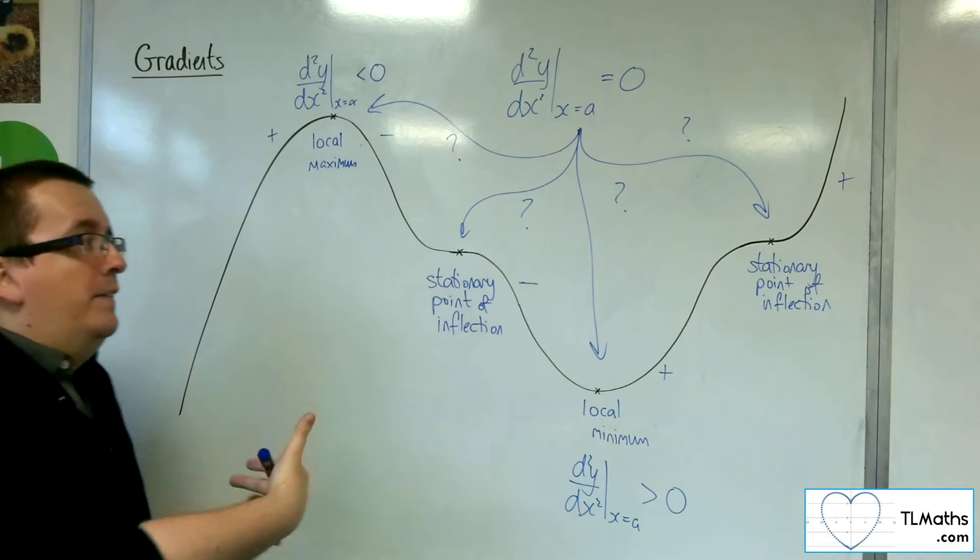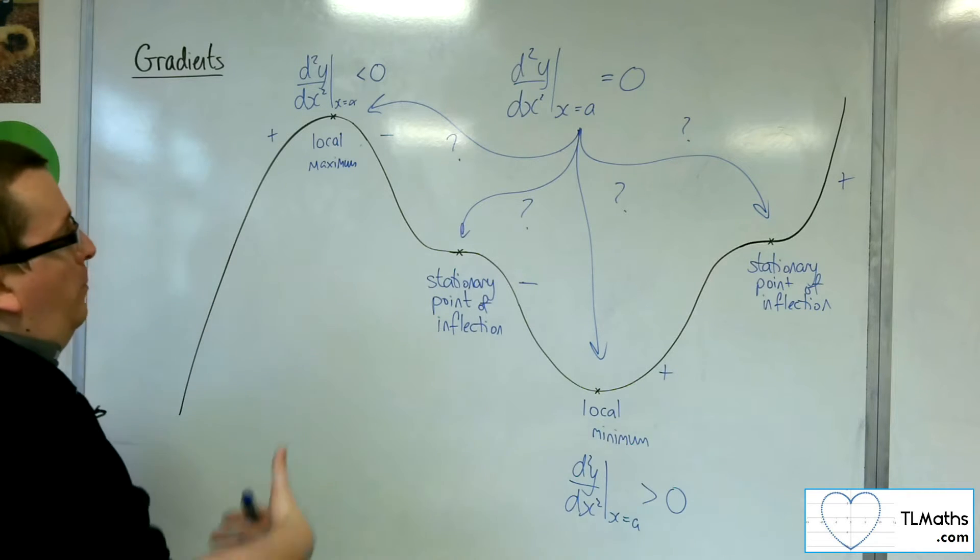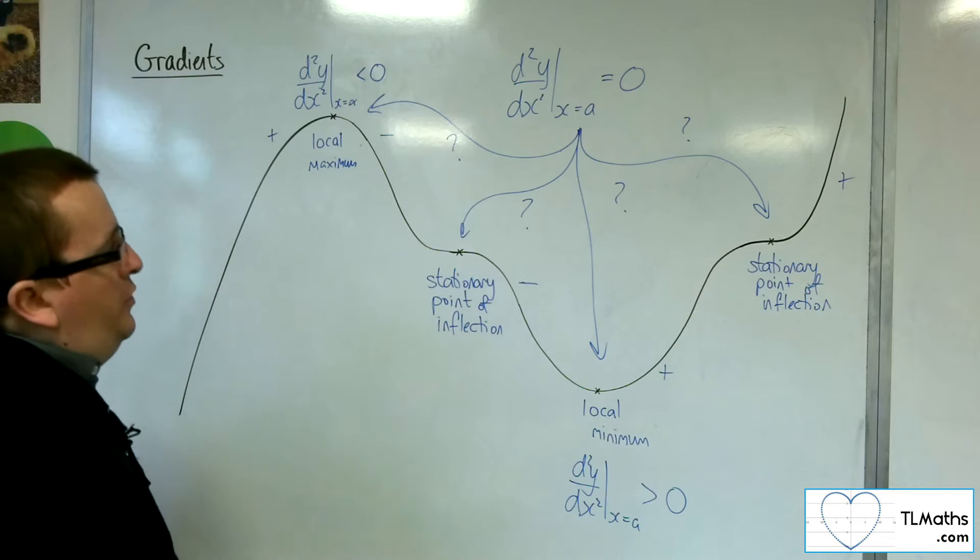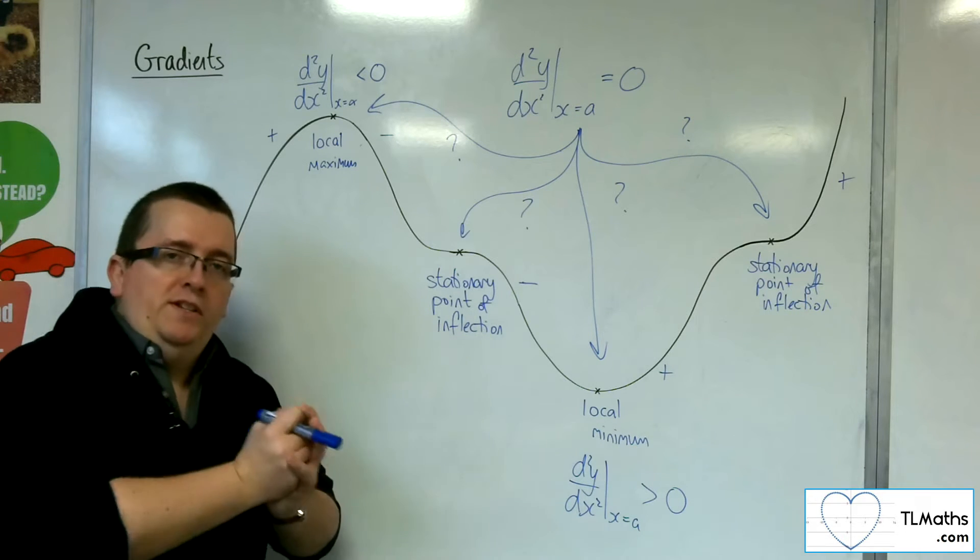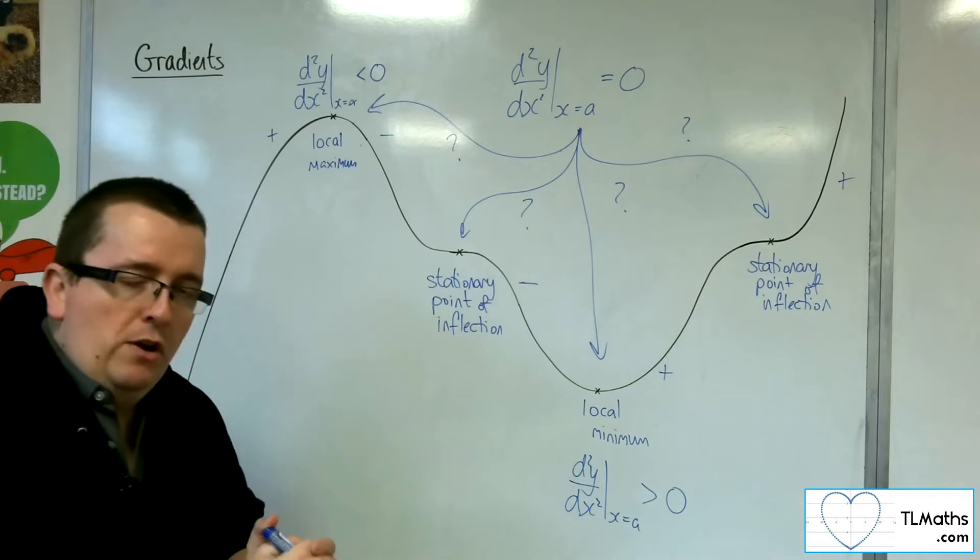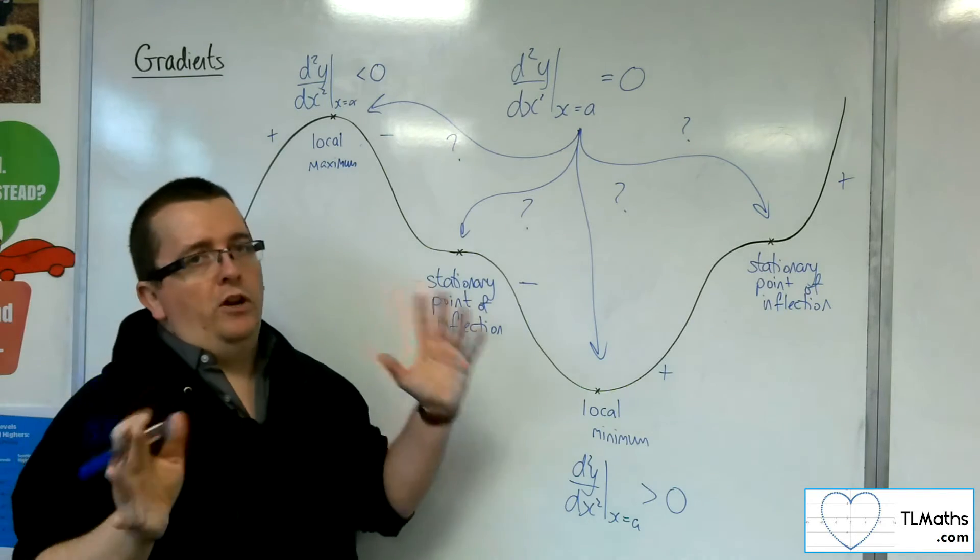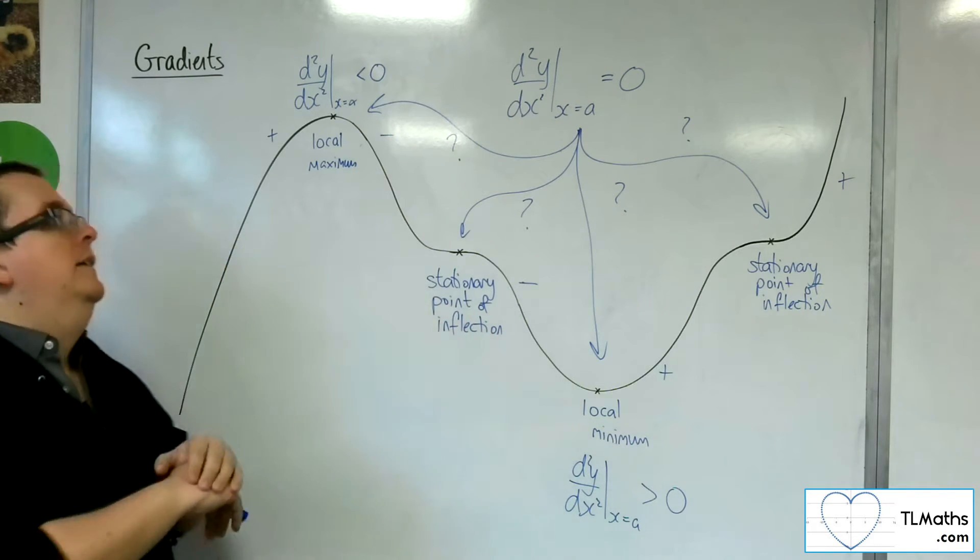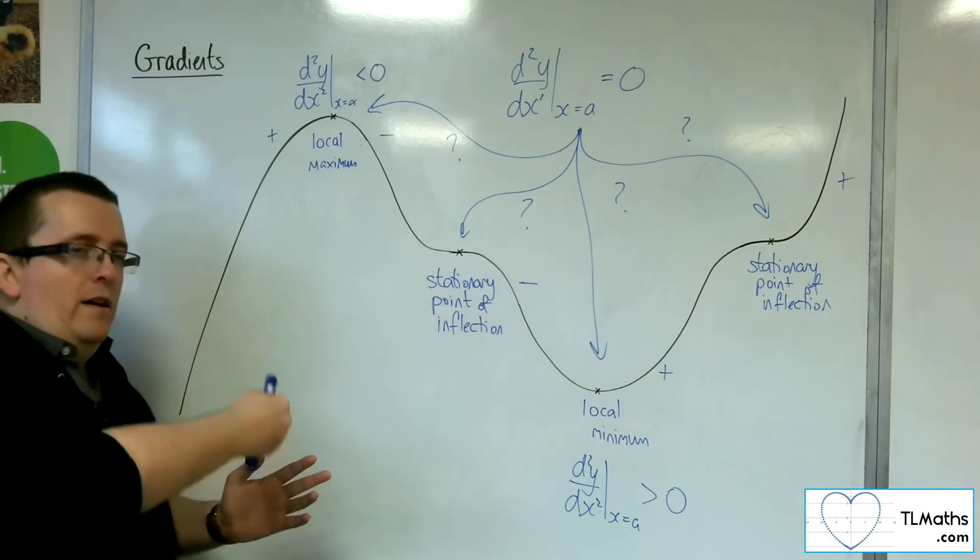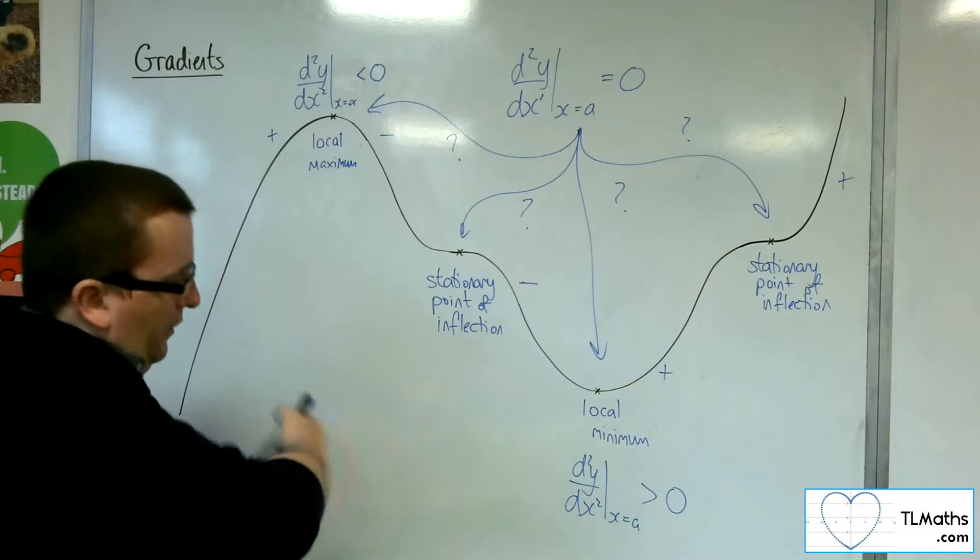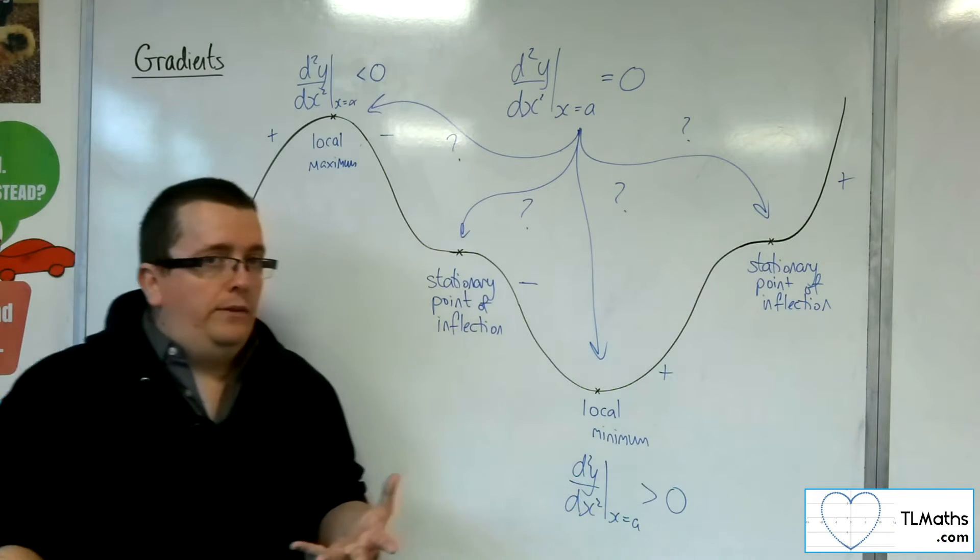And we found that there was this problem that if you substituted in x equals a, so at a stationary point, and you got the second derivative to be zero, then it actually didn't tell you what type of stationary point it was. And so we had to do a little bit more investigative work to look at the gradient either side of the stationary point to tell them what type it is.